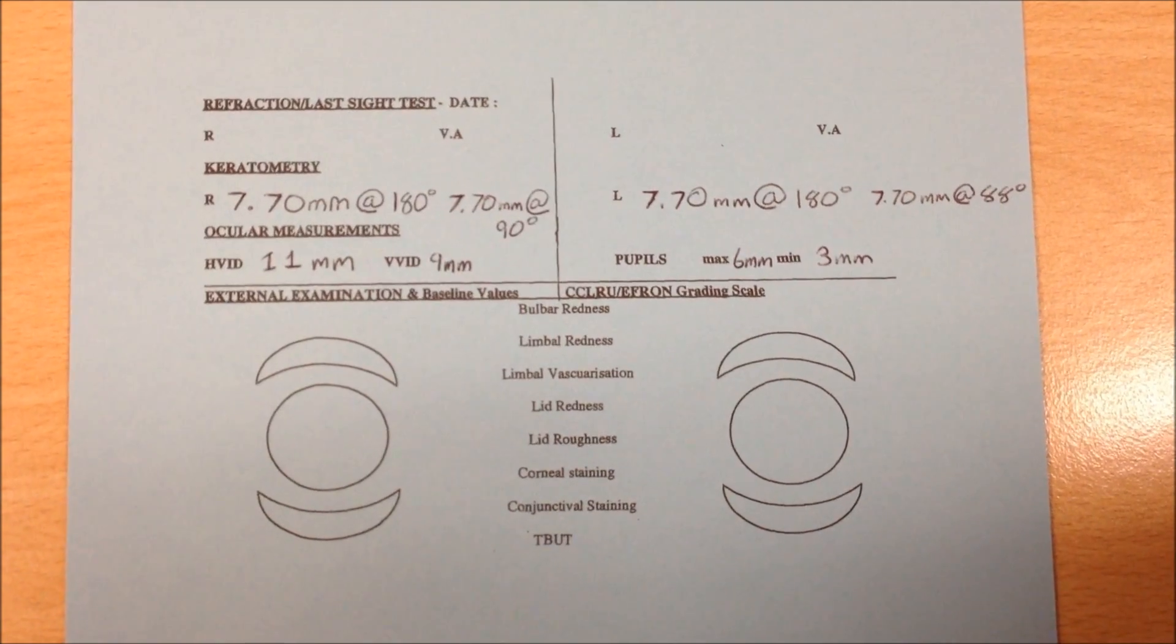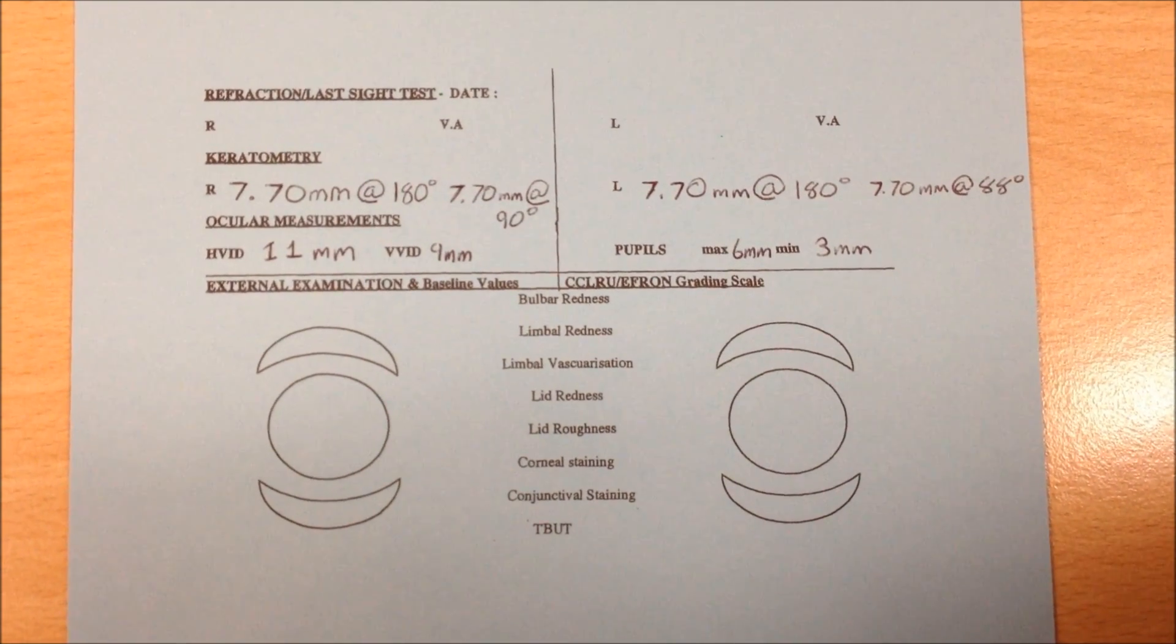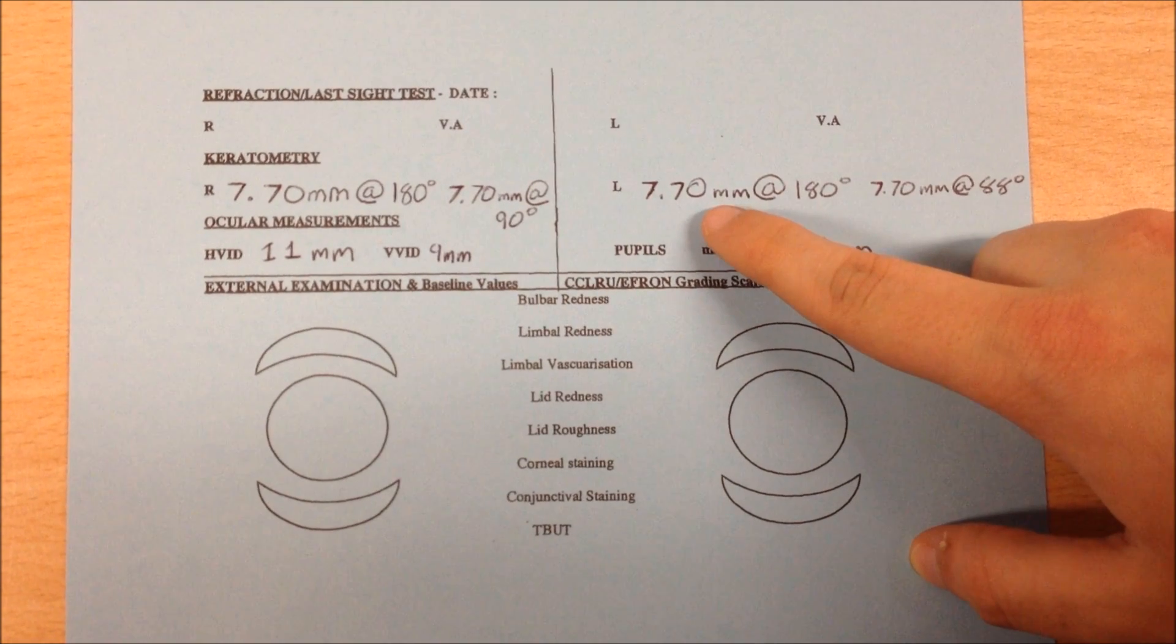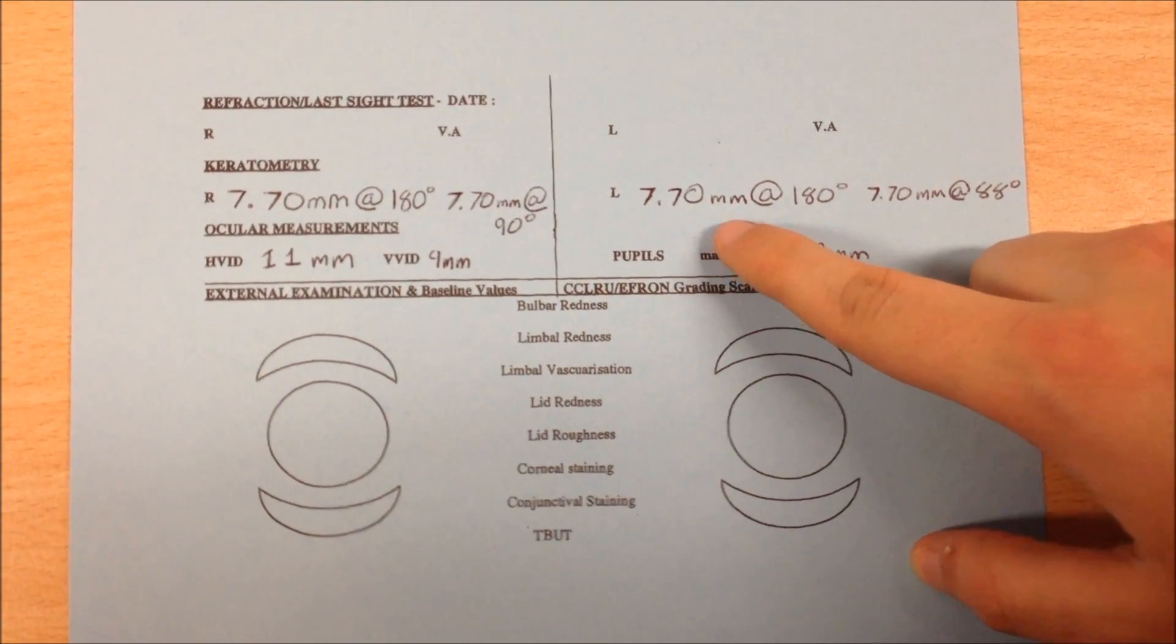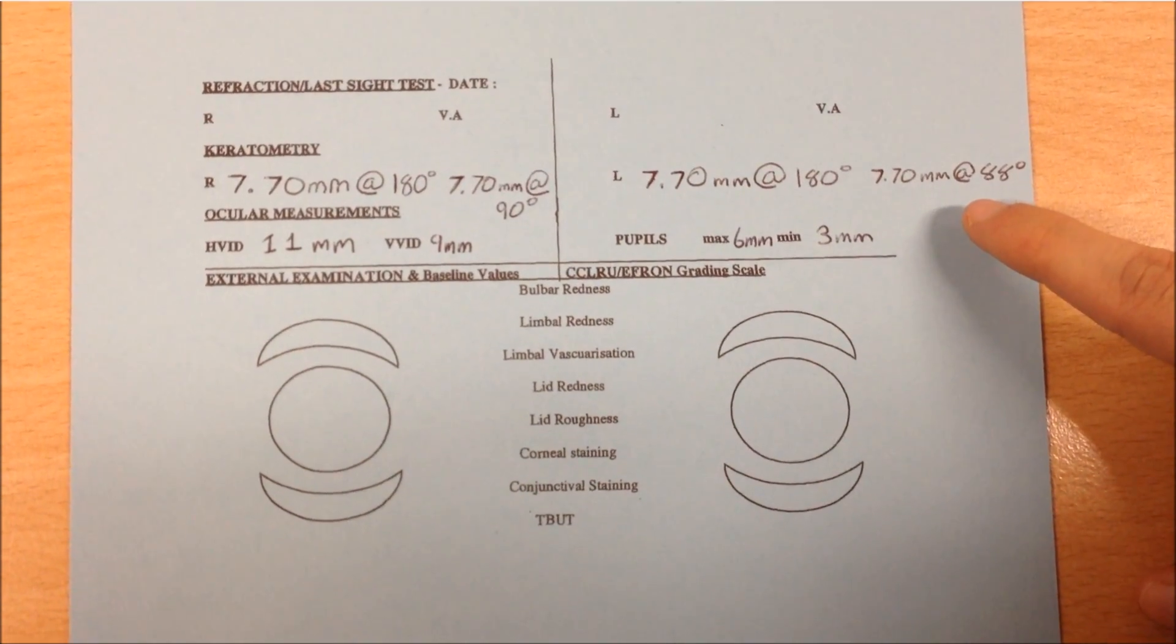Then we looked at the K readings. Now obviously in the video we only showed you how to do the left, obviously we do right and left, and we record them both. So like the ones we've seen in the video here, write the left. So you would do the horizontal K first, so that's 7.7 at 180, and then we had the vertical, that was 7.7 at 88.